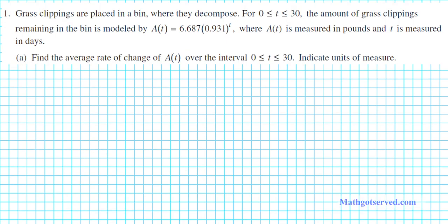Let's take a look at part A of question 1. It says grass clippings are placed in a bin where they decompose. For 0 ≤ t ≤ 30, the amount of grass clippings remaining in the bin is modeled by A(t) = 6.687 × 0.931^t, where A(t) is measured in pounds and t is measured in days. Question A asks: find the average rate of change of A(t) on the interval 0 to 30 and indicate units of measure.